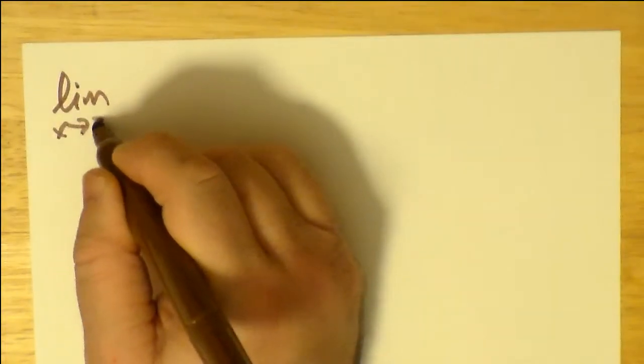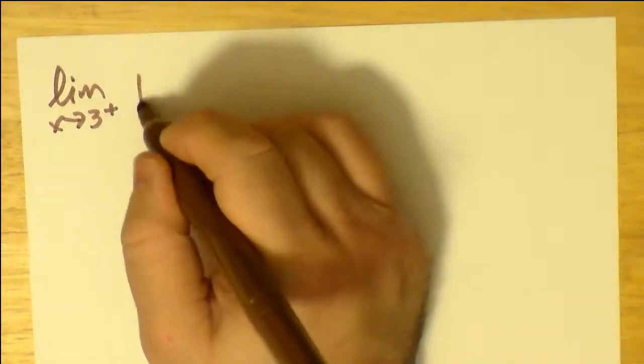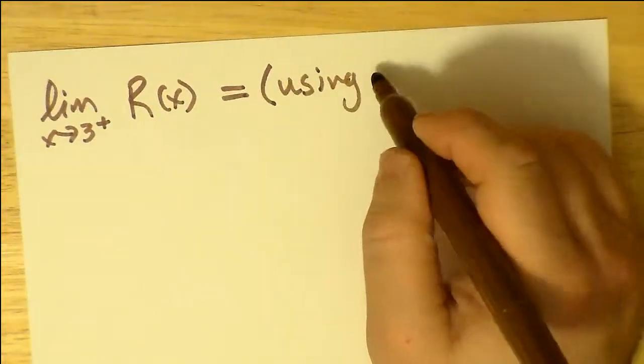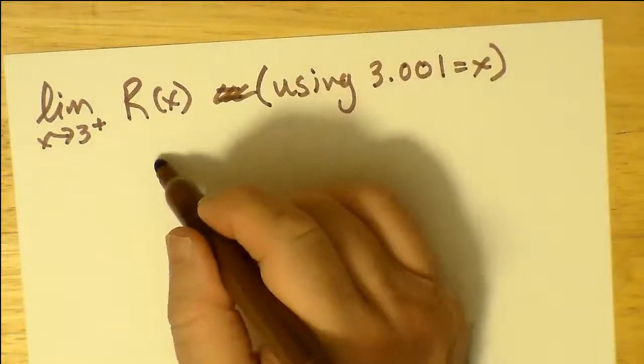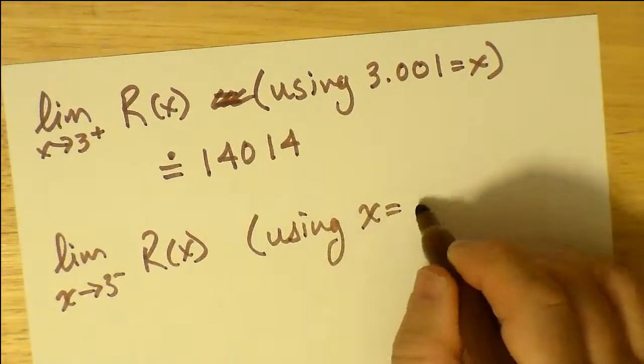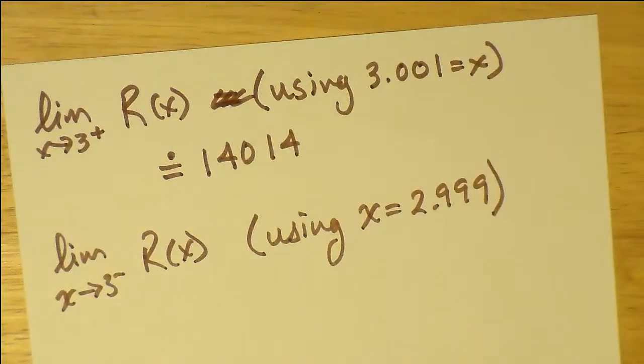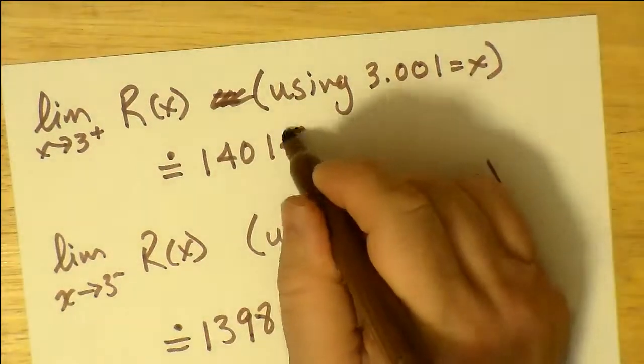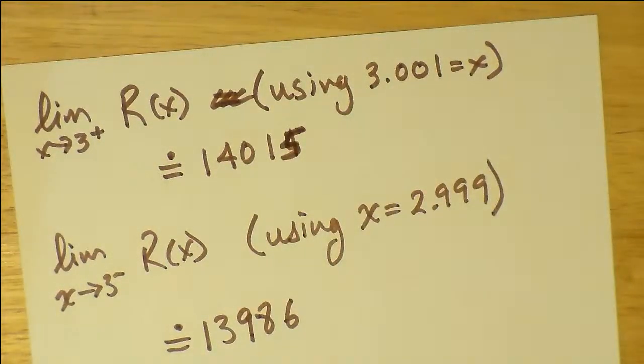So now, what about the limits as x approaches three from both the left and the right? I'll save you a bit of trouble. Rather than having to write this whole thing out, we're just going to plug in 3.001 into my graphing calculator. I get 14,014, which I think for all intents and purposes is going to positive infinity. On the other side, it's going to negative infinity.